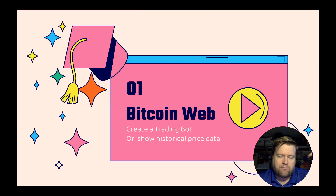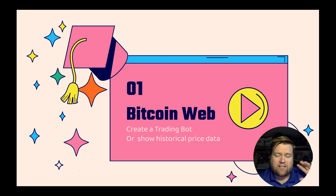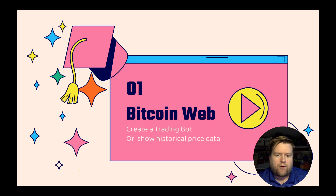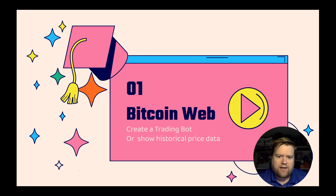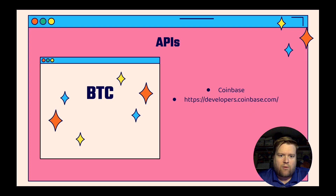First, if you have been following Bitcoin, it has been blowing up lately — it was at $28,000 per coin recently. I think right now is a really good time to jump into the Bitcoin ecosystem. A really cool project idea you could try is create a trading bot or create something that shows historical price data. Talking to an API and grabbing historical price data is a really good exercise of things you might be doing in a real job — you'll be connecting to a database and retrieving information.